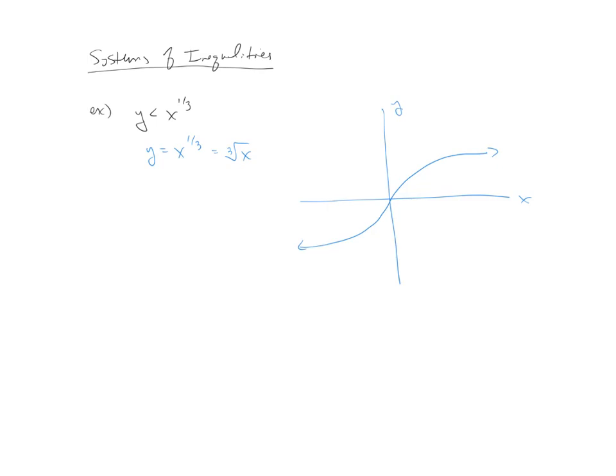So that curve actually splits up our x-y plane into two regions, the region above the curve and the region below the curve. The solution to the original inequality is going to be one of those two regions. So the easiest way to do this is actually just test a point. So I would recommend testing something easy. You want to test a point that's not on the graph.